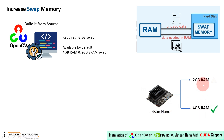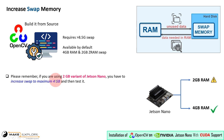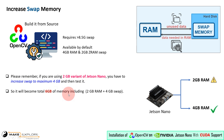We haven't tested it on the 2GB variant due to unavailability of hardware. So please let us know the results or any issues during installation if any of you ever try to install it on the 2GB Jetson Nano. Please remember, if you are using the 2GB variant, you have to increase swap to a maximum of 4 gigabytes. Then test it — so it will become a total of 6 gigabytes of memory, including 2GB RAM plus 4GB swap.